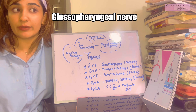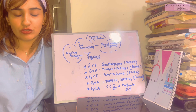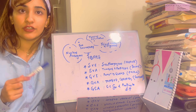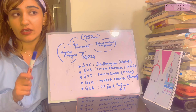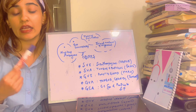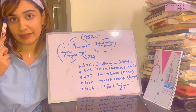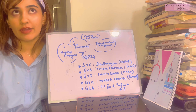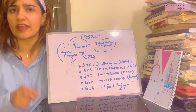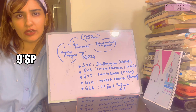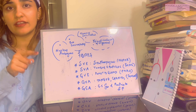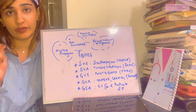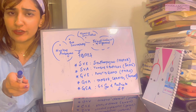Today we are discussing the ninth cranial nerve, known as the glossopharyngeal nerve. I'm only going to give you a brief overview of the neural course of the ninth cranial nerve. I want you to remember one mnemonic: '9 SP,' because the ninth cranial nerve supplies one and only one muscle — the stylopharyngeus muscle.